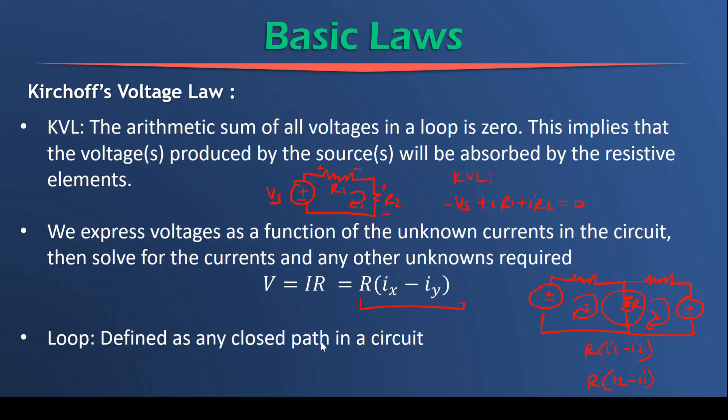What is a loop? A loop is defined as any closed path in a circuit. So if we look at this example, we can call this a loop. We can also call that a loop. And then we can call the big one a loop as well. What is a mesh? A mesh is defined as a loop that has no other loops inside it. So we cannot call this big loop a mesh. But we can call the smaller loop a mesh.